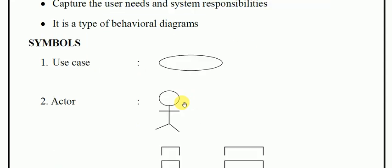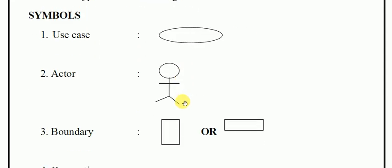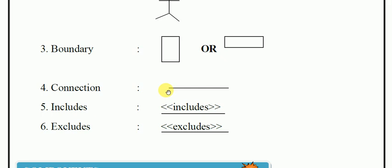You can see here the symbols that are used for use cases. You can represent your actor, the system boundaries using a rectangle, connections between elements, and also arrows to show Include and Exclude relationships.